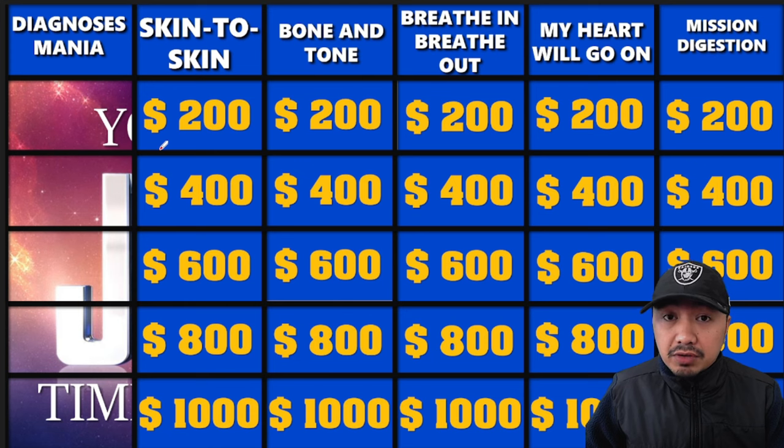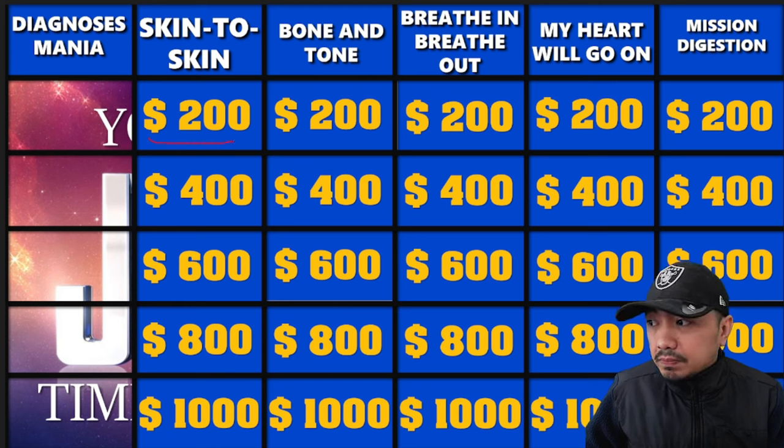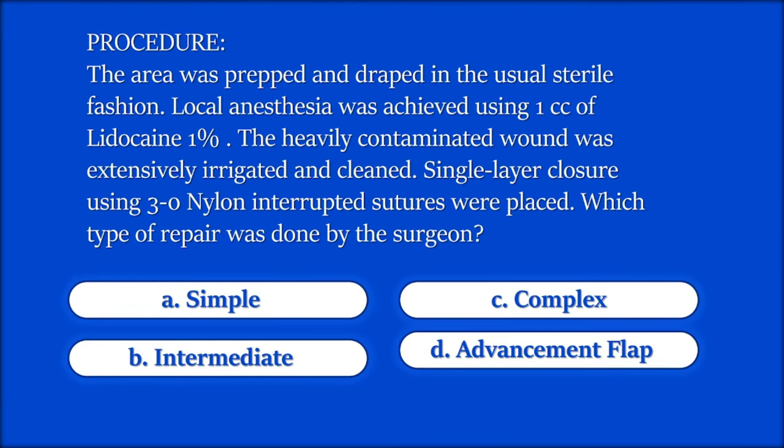Let's start with skin to skin for $200. The area was prepped and draped in the usual sterile fashion. Local anesthesia was achieved using one cc of lidocaine one percent. The heavily contaminated wound was extensively irrigated and cleaned. Single layer closure using three-zero nylon interrupted sutures were placed. Which type of repair was done by the surgeon?